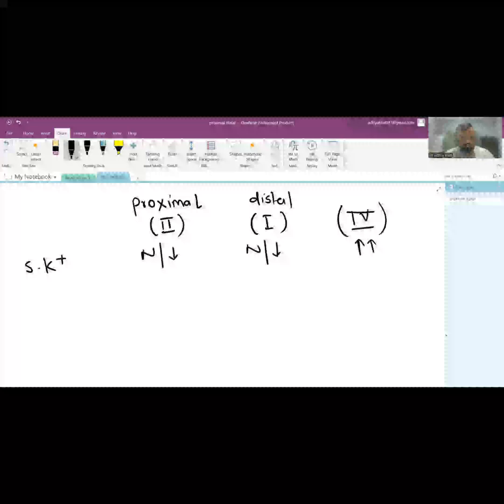Urine pH in proximal RTA is less than 5.3, while in distal RTA it is more than 5.3. As you understand, distal RTA is an abnormality of acidification—the H+ ions cannot be secreted into the urine. That is the abnormality in type 1 or distal RTA.